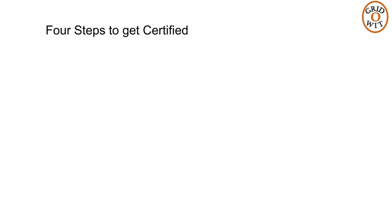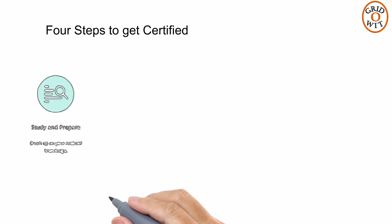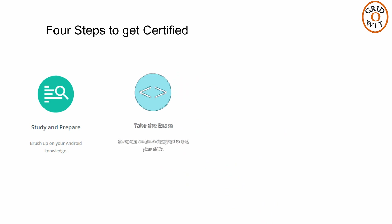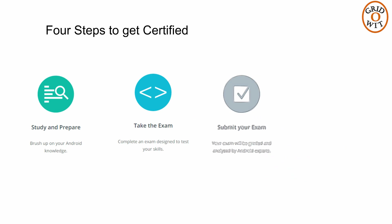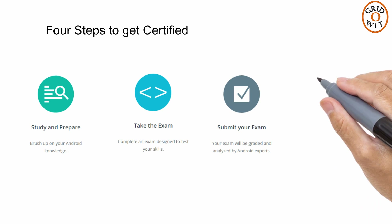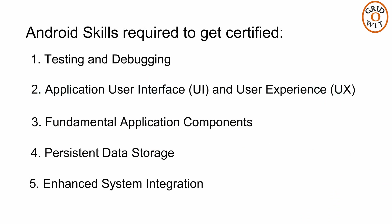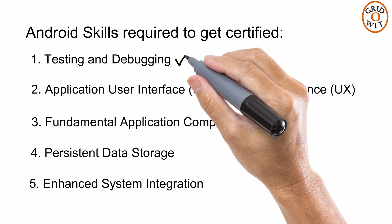You can get certified in four easy steps: first, study and prepare; next, take the exam; then submit your exam; and finally, earn your certification. Google's Associate Android Developer exam will ask you to demonstrate skills in the following areas: testing and debugging.